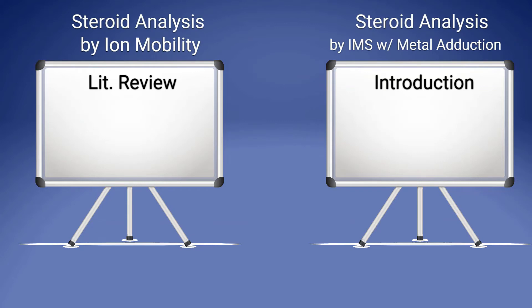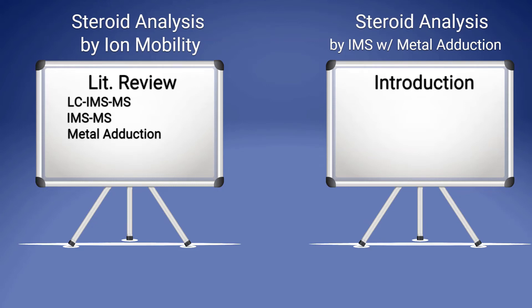When writing these, it might be difficult to know how much literature to cover in a lit review versus an introduction. I want to give you an example from my own papers: a literature review I wrote about steroid analysis by ion mobility, and a research paper that looked at steroid analysis through ion mobility with metal adduction. In my literature review, I covered papers on LC-IMS-MS (chromatography coupled to ion mobility), IMS-MS without chromatography, metal adduction to analyze steroids, derivatization, and papers analyzing biological samples for steroids — a wider range, about 6 to 12 papers total.